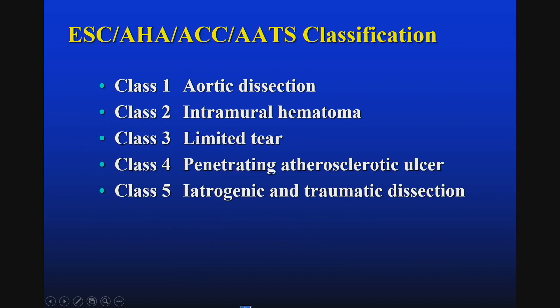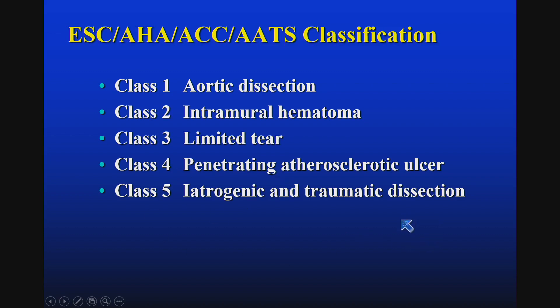A number of classification schemes have been proposed. One is by the American Heart and American Thoracic Society, which looks at classes 1 through 5, including aortic dissection, intramural hematoma, limited tear, penetrating atherosclerotic ulcer, and iatrogenic or traumatic dissection. This is useful for writing review papers, but from a clinical standpoint this classification is not that useful.